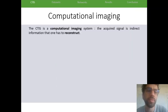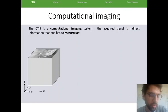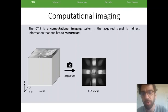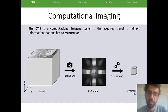What's important to note is that the CTIS is actually a computational imaging system, which means that the acquired signal is indirect information that one has to reconstruct. So if you have your scene and you put it through a CTIS, you get this weird image that I just showed you, and you need to apply reconstruction algorithms to get an estimation of the original cube.